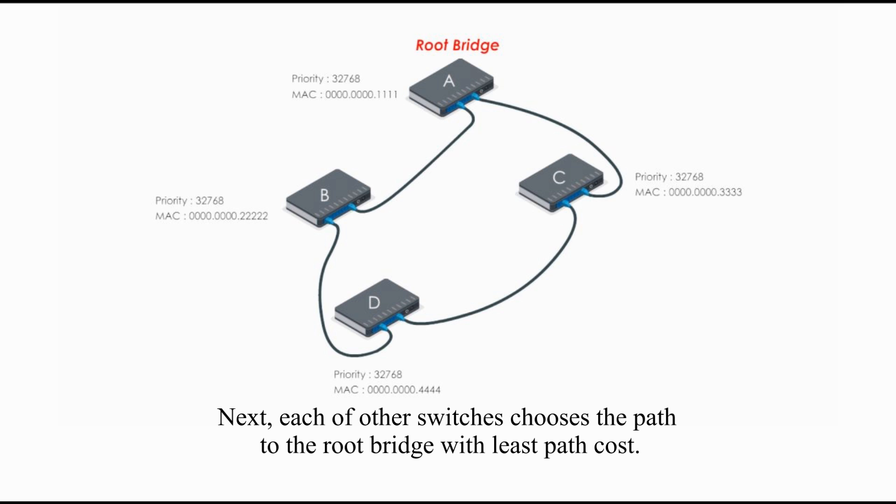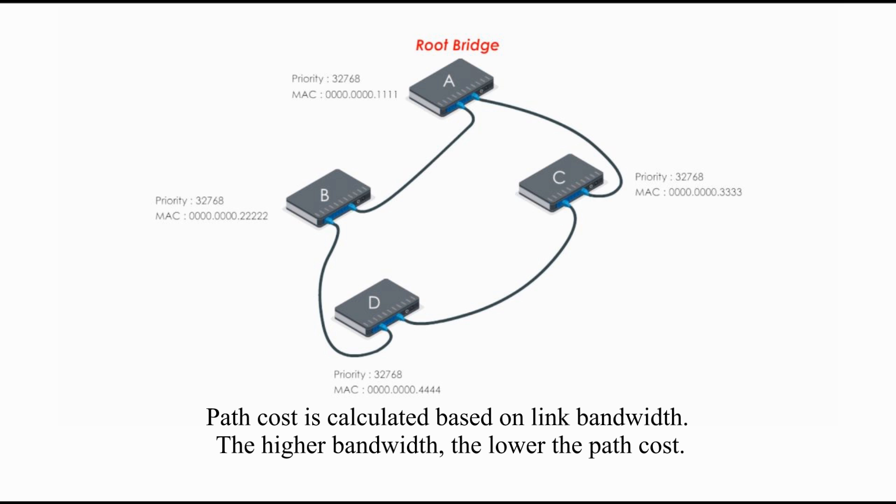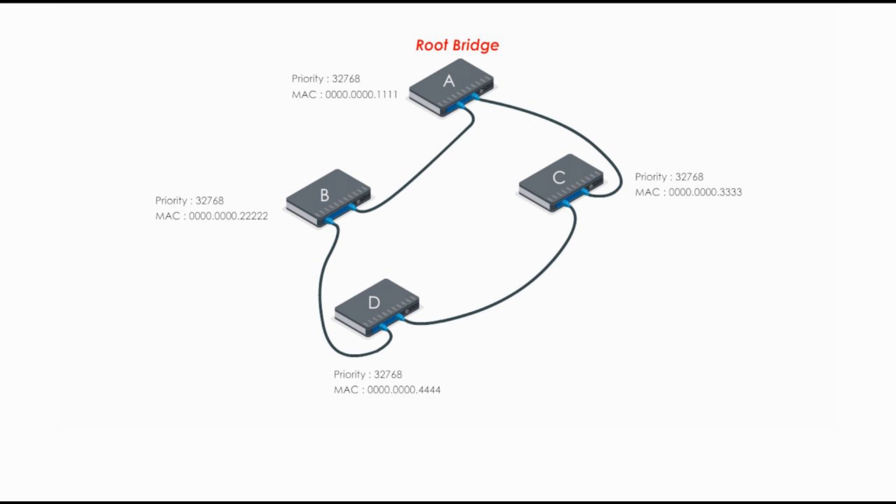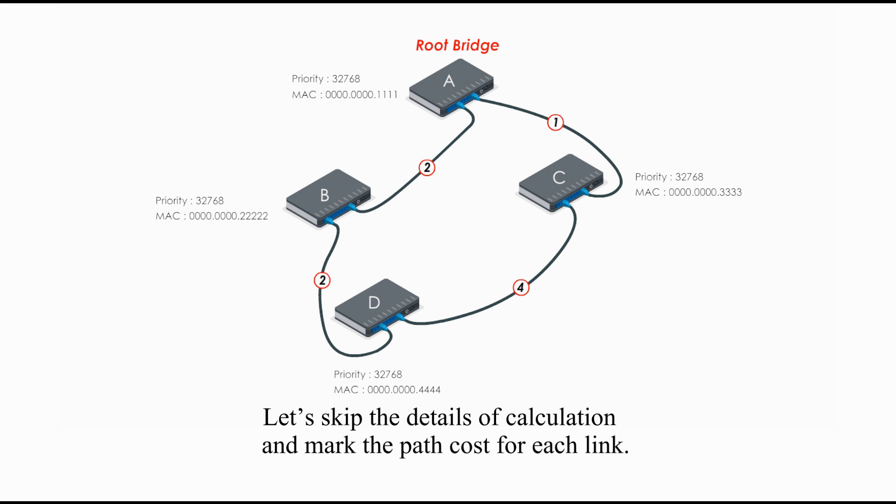Next, each of other switches chooses the path to the root bridge with the least path cost. Path cost is calculated based on link bandwidth. The higher bandwidth, the lower the path cost. Let's skip the details of calculation and mark the path cost for each link.